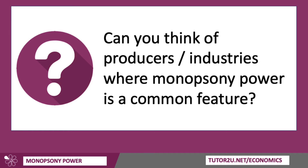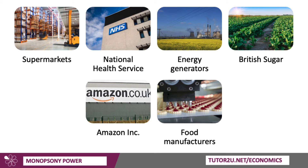This is a concept that's become increasingly important in recent years. Examples of monopsony power include supermarkets buying from farmers, the National Health Service buying drugs from pharmaceutical companies, energy generators and British Sugar buying component parts from suppliers, Amazon having huge monopsony power over small businesses selling on its platform, and food manufacturers buying ingredients to mass process food.